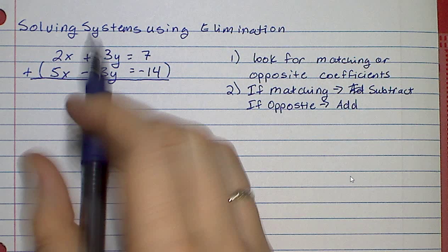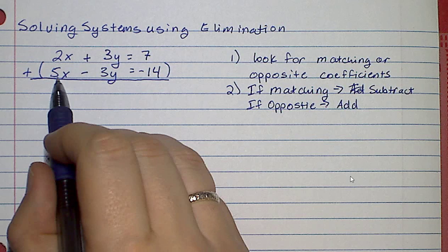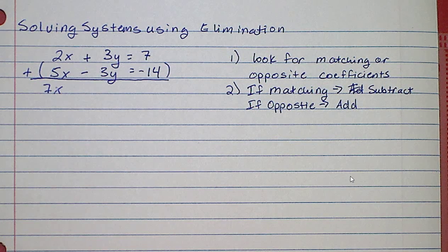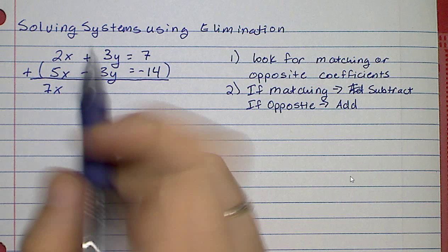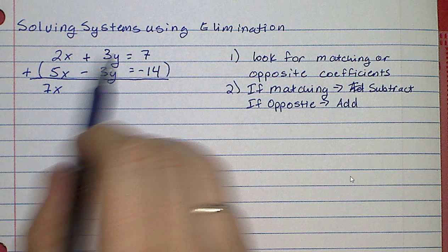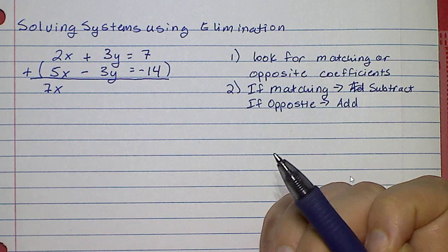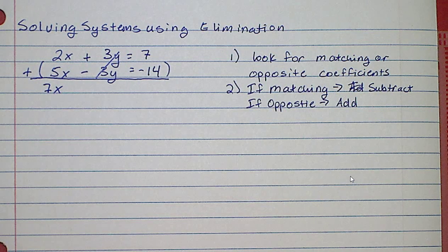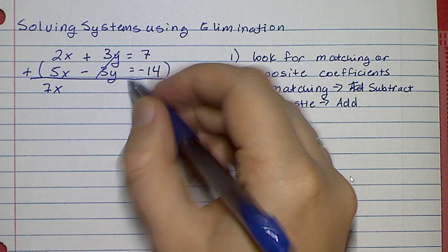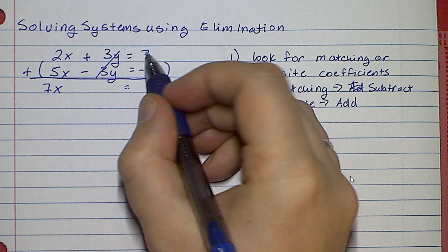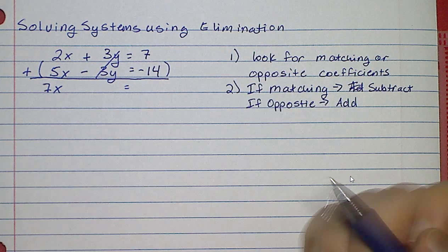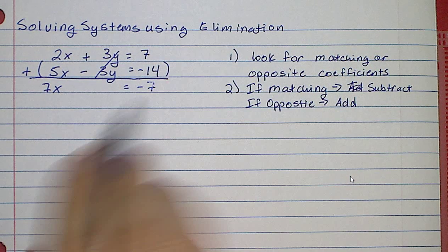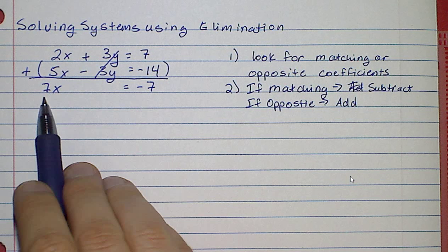So 2x plus 5x makes 7x — I can do that because they're both x's, they're like terms. Positive 3y plus negative 3y makes 0y, so I can just cancel it out — it goes away. I drop down my equal sign, and then 7 plus negative 14 turns into negative 7.